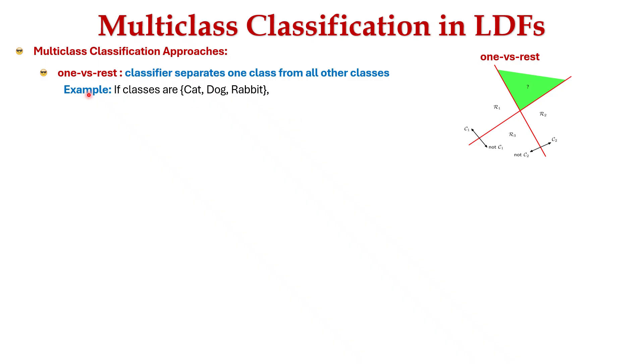Now let's learn about multi-class classification in linear discriminant functions. The first approach is one versus rest, where the classifier separates one class from all other classes. For example, with three classes—cat, dog, and rabbit—the first classifier represents cat versus not cat, the second is dog versus not dog, and the third is rabbit versus not rabbit. The decision is chosen based on the classifier with the highest confidence value.